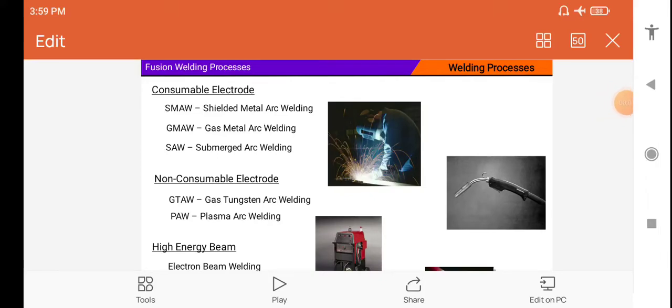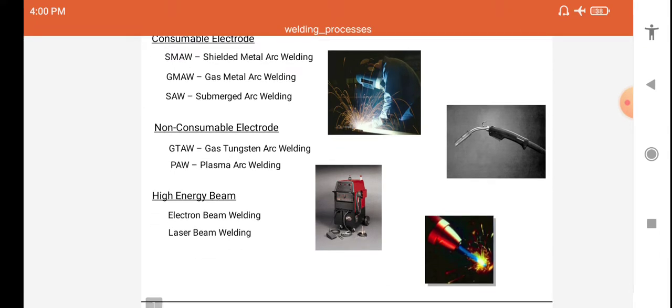Welcome back friends, we are now going to study the subject Manufacturing Process. In this subject, the subtopic is fusion welding processes. Consumable electrodes are given in the figure, which are SMAW Shielded Metal Arc Welding, GMAW Gas Metal Arc Welding, SAW Submerged Arc Welding. Non-consumable electrodes are GTAW Gas Tungsten Arc Welding, PAW Plasma Arc Welding, high energy beam or Electron Beam Welding, and Laser Beam Welding as shown in the figure.